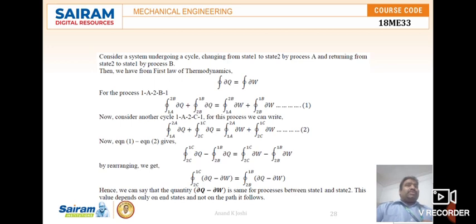The integral from 1A to 2 of δQ plus the integral from 2B to 1 of δQ equals the integral from 1A to 2 of δW plus the integral from 2B to 1 of δW. We consider this as equation number 1.